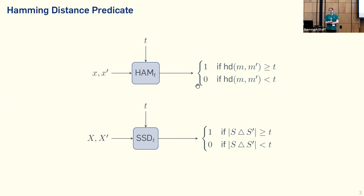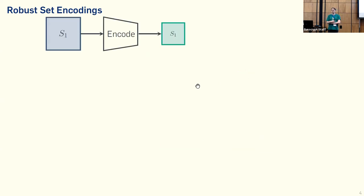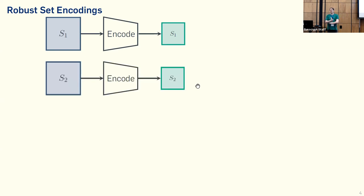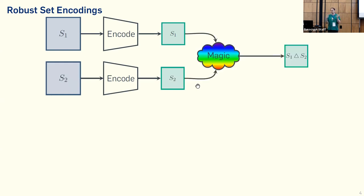So how do we construct something for symmetric set difference? We introduce a notion of robust set encodings. Basically, we have a description of a large set S1, and we have an encoding function that encodes this in a compressing way — the small encoding is smaller than the normal description of the set. If we have two of these, a robust set encoding gives us some magic functionality that, given two compressed representations of the sets, we can get a compressed representation of the symmetric set difference of the two sets.